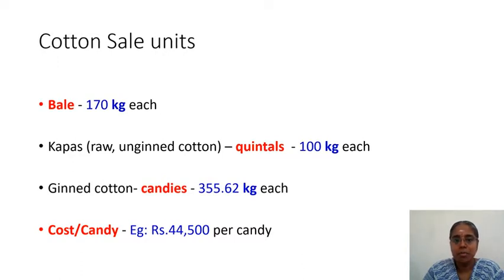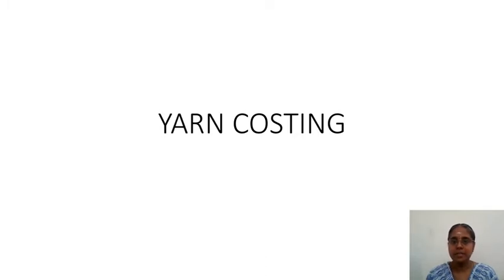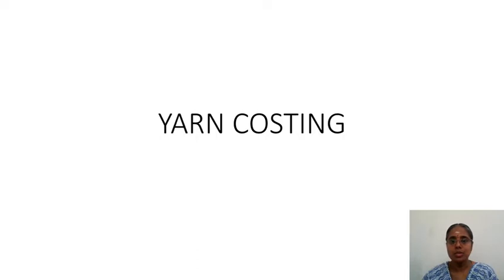Cotton prices vary day by day, much like the stock market — they rise and fall like share prices. As approximate 2019 data, one variety was quoted at forty-four thousand five hundred rupees per candy. After purchasing cotton in candies, production of carded or combed yarn begins, as already covered. Now we will go into yarn costing.